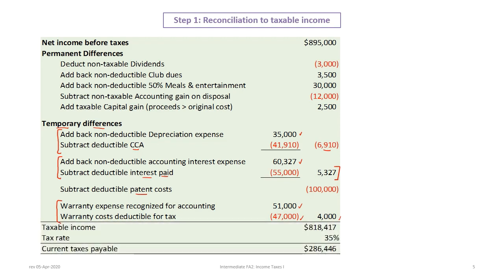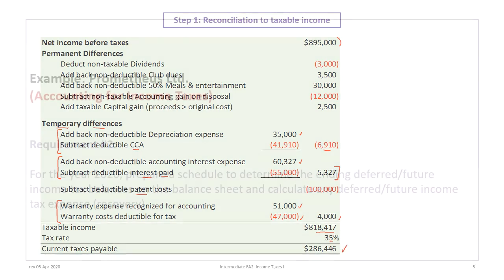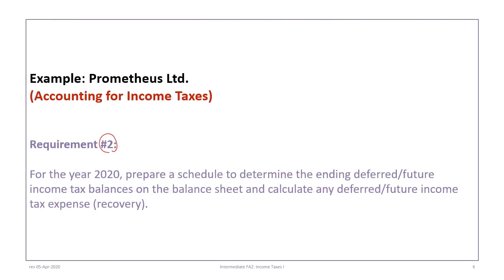When all is said and done, starting with net income for accounting purposes of $895,000 and adding back and subtracting all temporary and permanent differences, we end up with taxable income of $818,417. Multiplying by the current tax rate — not the future tax rate — of 35% gives us current taxes payable of $286,446.